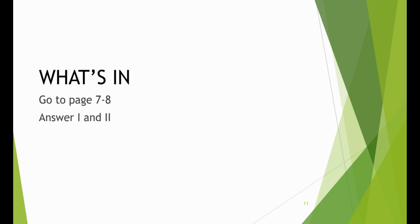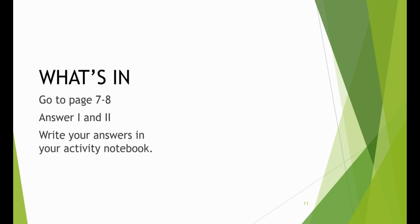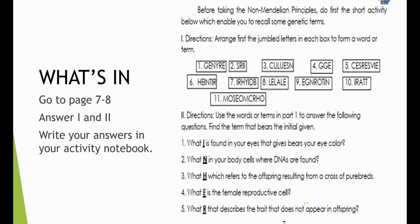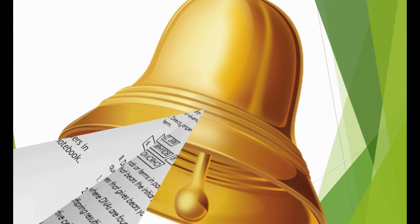Let's have more activities related to our lesson today. Go to page 7 to 8 in What's In and answer Test 1 and Test 2, writing your answers in your activity notebook. In Test 1, arrange the jumbled letters in each box to form a word or term. Then in Test 2, use the words or terms from part 1 to answer the following questions — find the term that bears the initial gift. Are you ready to answer? Let's go!